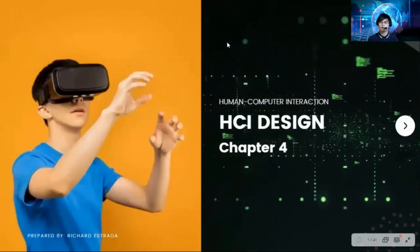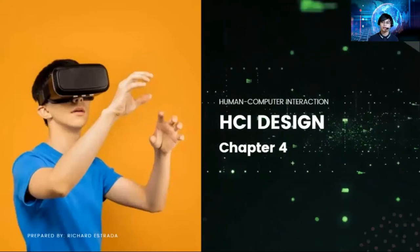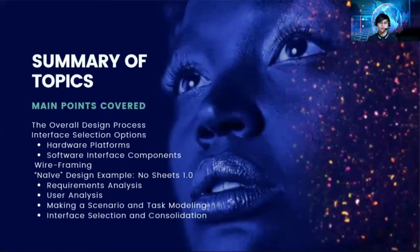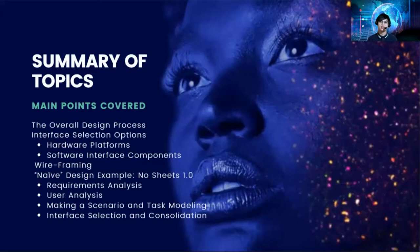Hello everyone and welcome to Chapter 4 of Human-Computer Interaction. For this chapter we will be discussing HCI design. The summary of topics for this video includes the overall design process, different interface selection options, hardware platforms, software interface components, wireframing, and an example using the No-Sheets application.